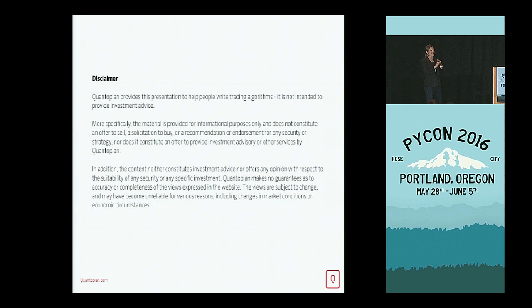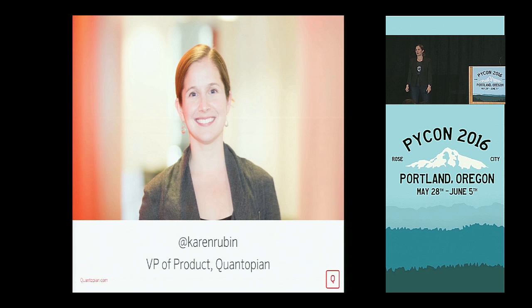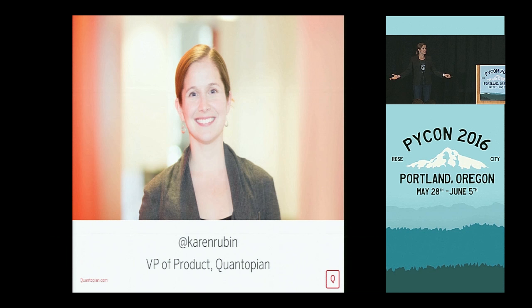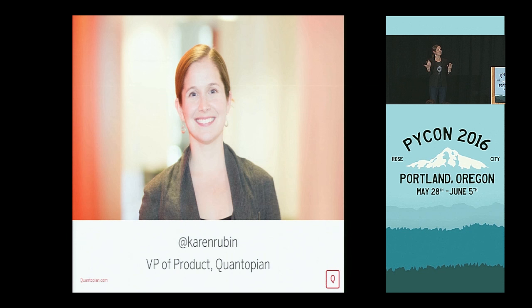I'm the VP of product at a company called Quantopian. Quantopian has a platform that lets people write, trade, research, and test strategies to invest in the market. We have a community of just under 80,000 users who are doing this all of the time. They work together, they work individually. All of the code that they write to invest in the market is their own. And then we identify the best strategies and make allocations to those strategies, and the algo author gets a percent of the profit.